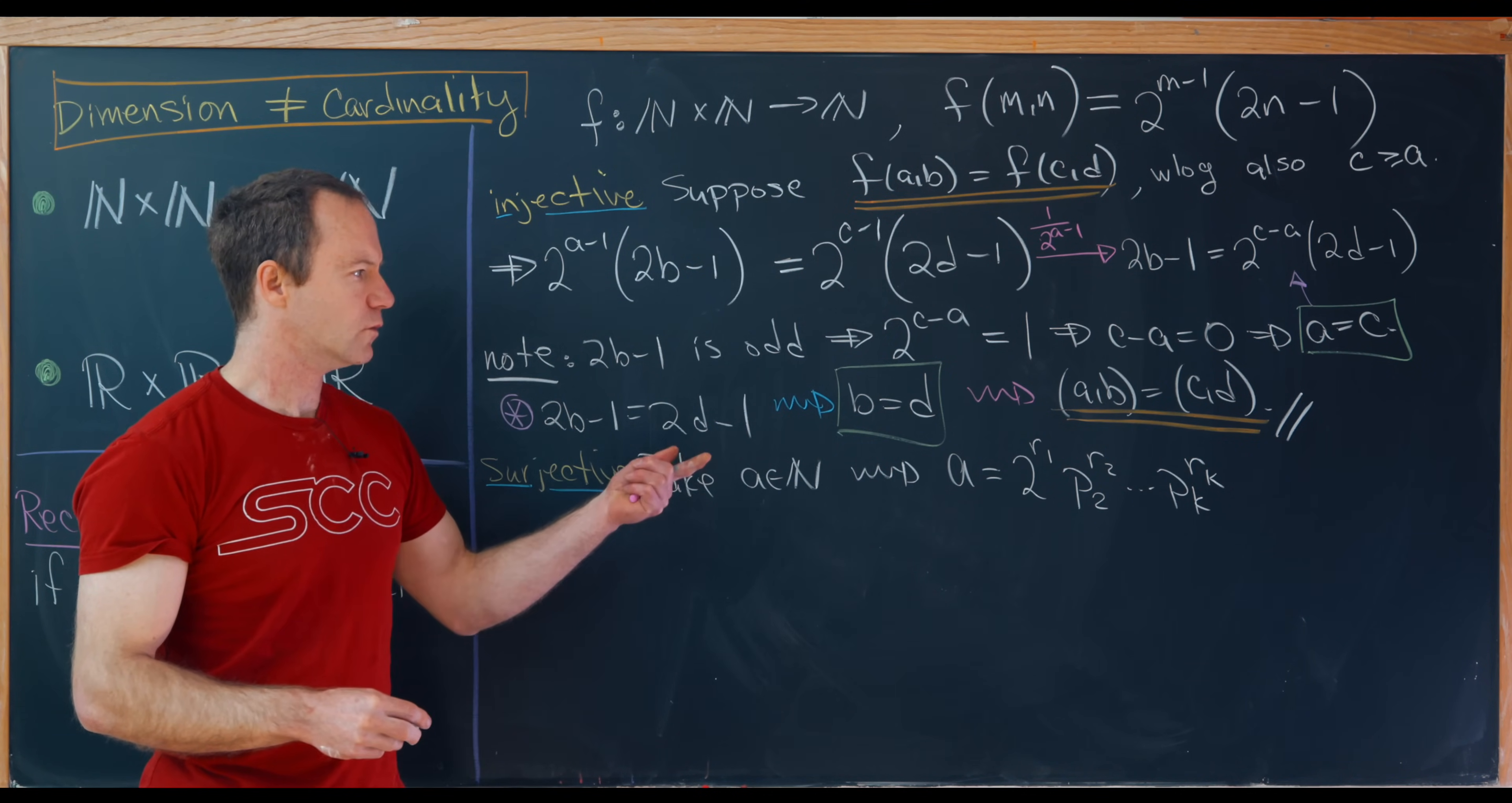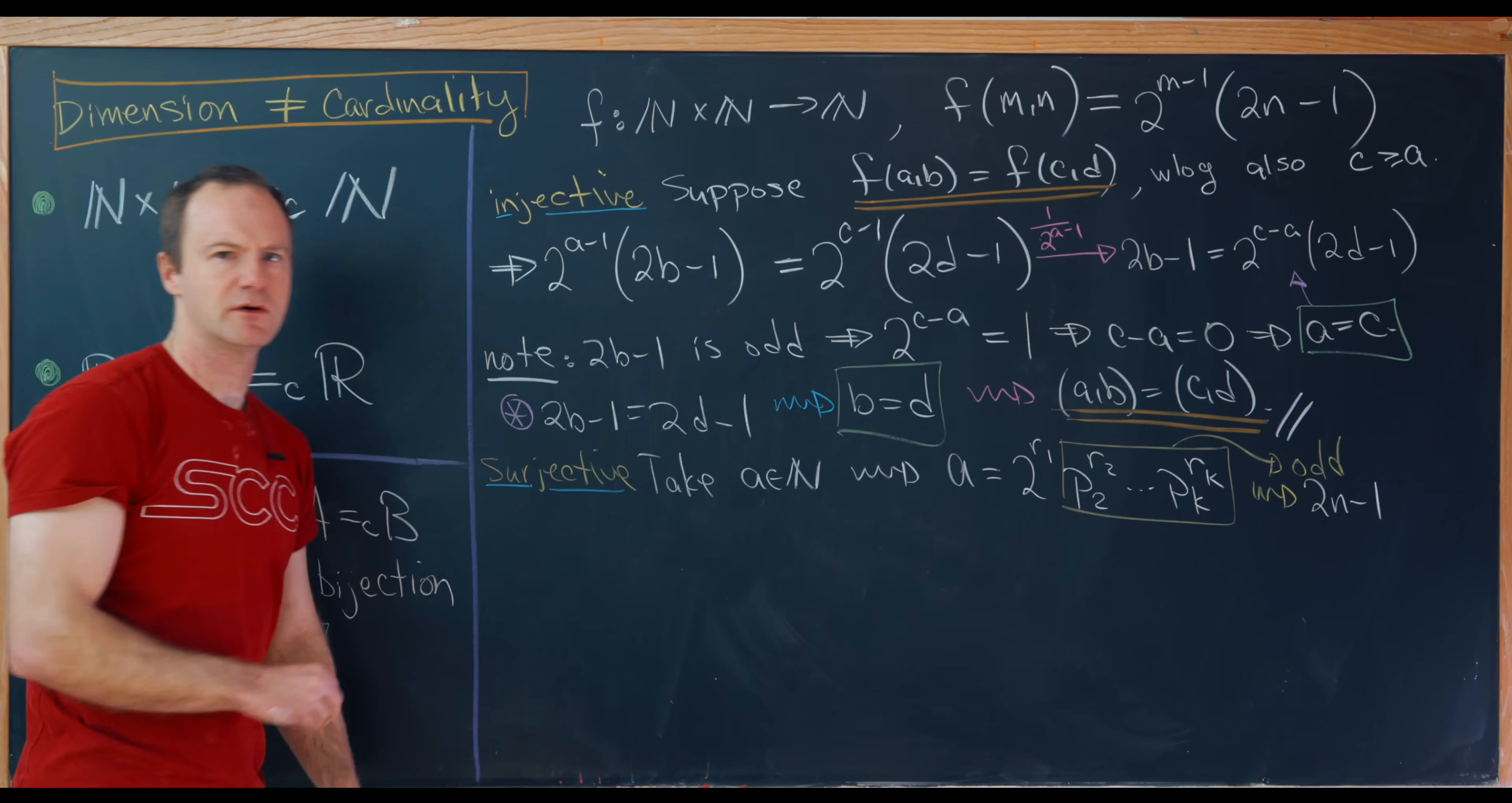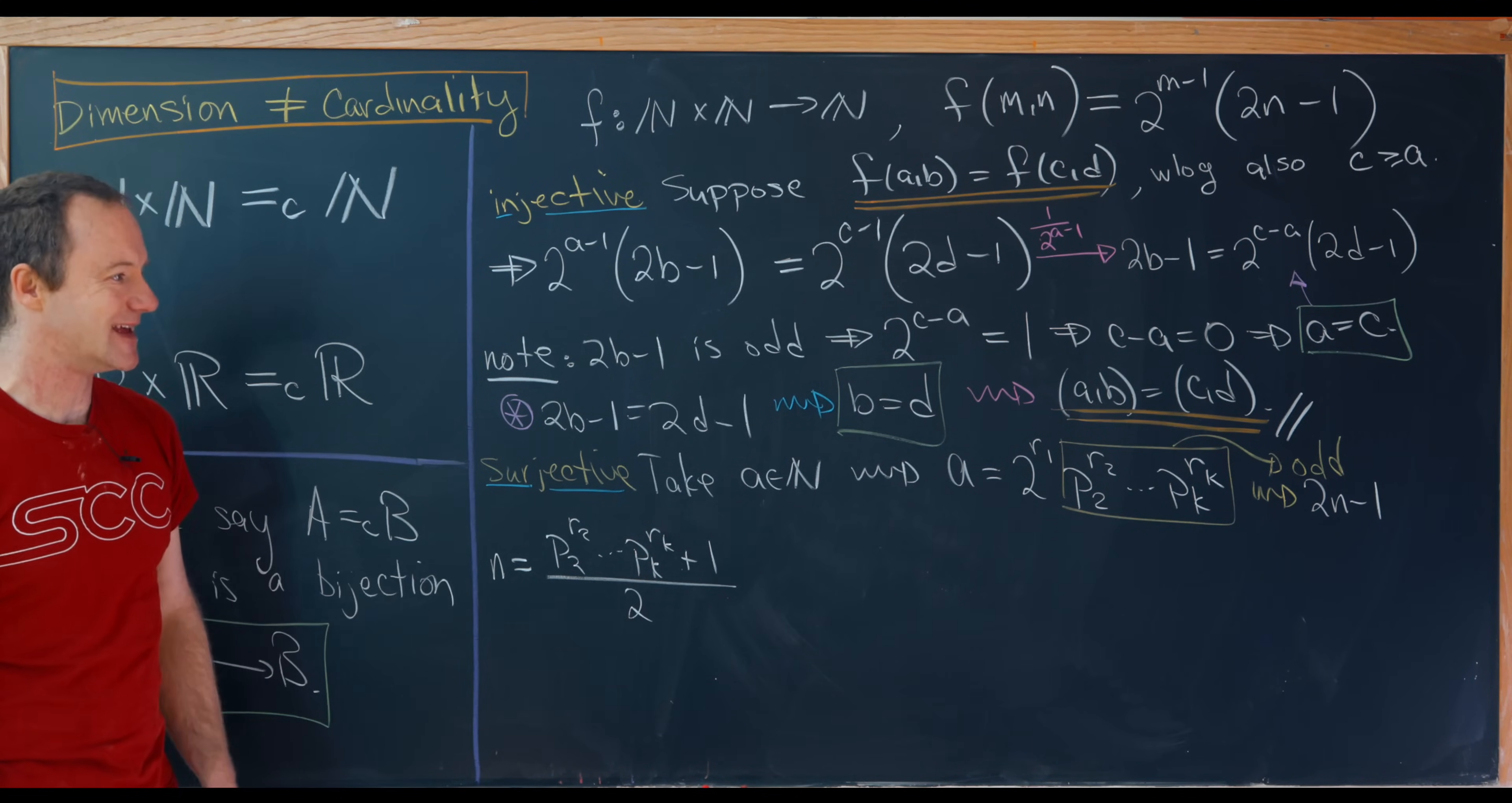Well, there's only one even prime, so that means that all of these are odd primes. But since all of these are odd primes, this whole thing is odd. But since this whole thing is odd, it can be written in the form 2 times n minus 1. And so if you want an explicit version of n, we can get that fairly easily. Maybe we could write n as p2 to the r2 multiplied up to pk to the rk plus 1 over 2. So again, we've got a product of odd primes plus 1 is even, divided by 2 is still a natural number.